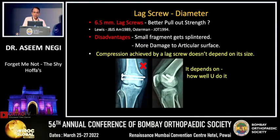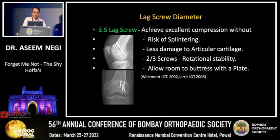Don't forget to recess all screw heads beneath the articular cartilage. 6.5 mm lag screws are not to be used — a small Hoffa fragment can get splintered by them and they cause more damage to the articular surface. Remember that the compression achieved by a lag screw doesn't depend on its size; it depends on how well you execute your lag screw technique.